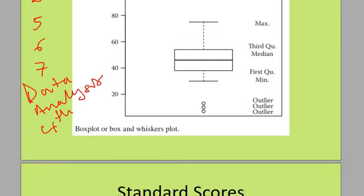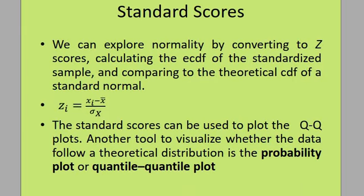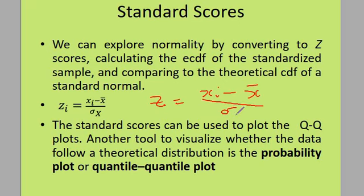The next topic is understanding the normal distribution. The fundamental way of converting to normality is using Z-scores. The formula for the standard normal Z-score is: Z equals X_i minus the mean X-bar, all divided by the standard deviation. These standardized scores can then be used to plot QQ plots, which are quantile-quantile frontier plots.